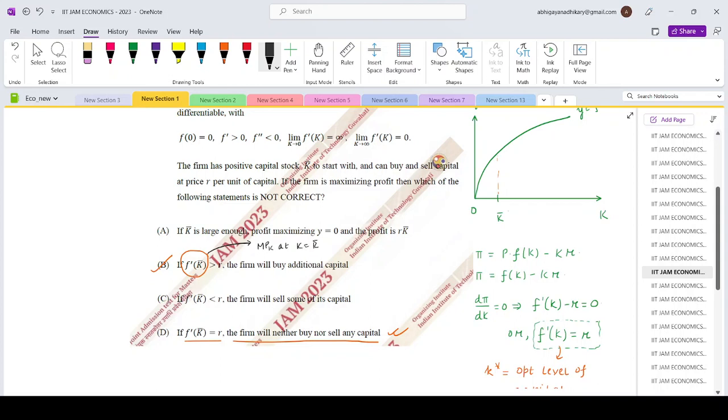And what is R? It is the marginal cost that it has to bear for using an extra unit of capital. So if the marginal benefit is greater than marginal cost, then obviously the firm will buy.